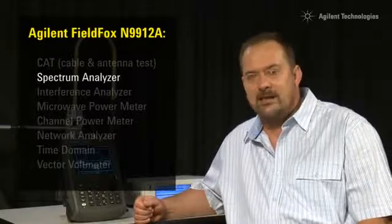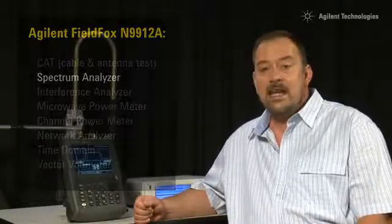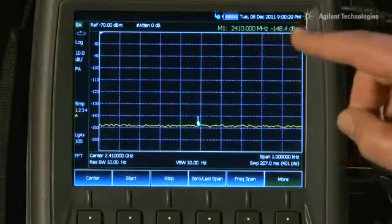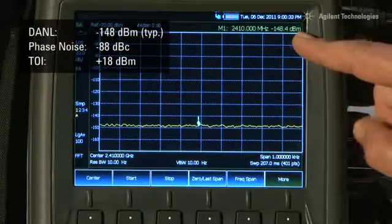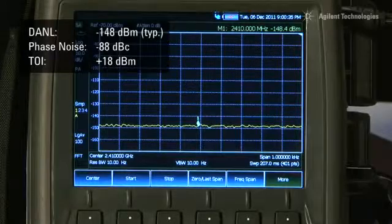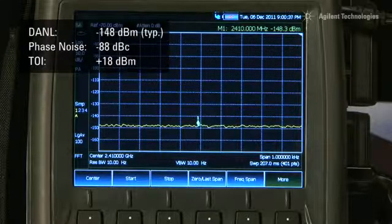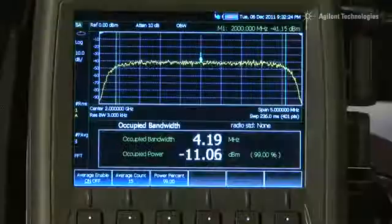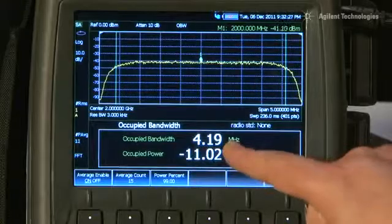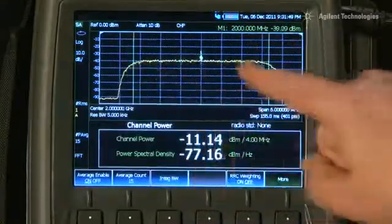The optional spectrum analyzer is quite outstanding. It can measure signals as low as minus 148 dBm with a phase noise of only minus 88 dBc and a third order intercept better than plus 18 dBm. And the same power sweep one-button measurements that you'd find on Agilent's benchtop analyzers are built in, such as occupied bandwidth, adjacent channel power and channel power.